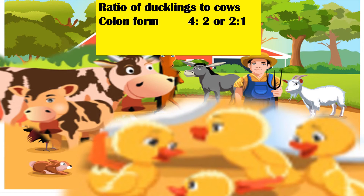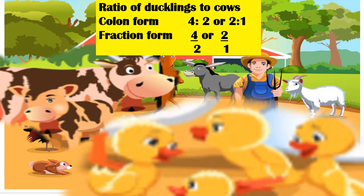We can also express our answer in its simplest form. We're going to divide 4 is to 2 by a common factor, which is 2. Four divided by two equals two, and two divided by two equals one. In simplest form, the ratio of ducklings to cows is 2 is to 1. We can also write it in fraction form: four over two, or two over one.